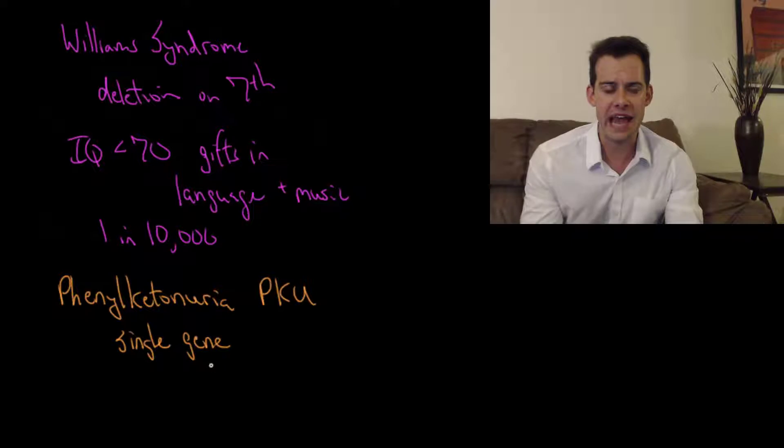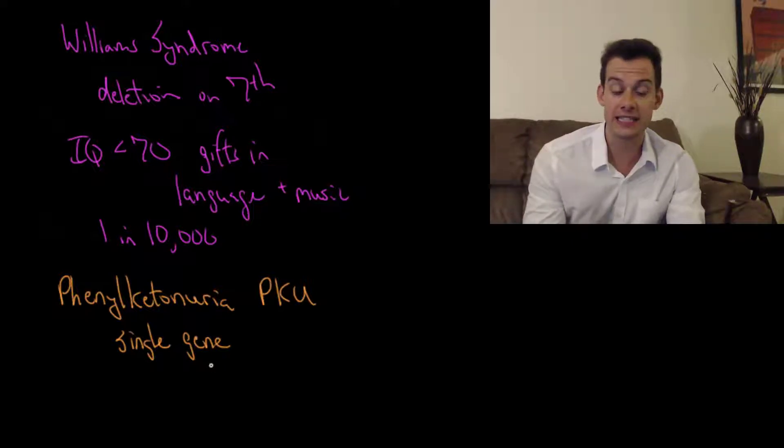The idea of PKU is people have this single gene mutation and it prevents them from making this enzyme called phenylalanine hydroxylase. And so what phenylalanine hydroxylase does is it breaks down this substance called phenylalanine and phenylalanine is common in lots of foods. So you eat meats or cheeses or artificial sweeteners that contain phenylalanine and this phenylalanine hydroxylase breaks it down.